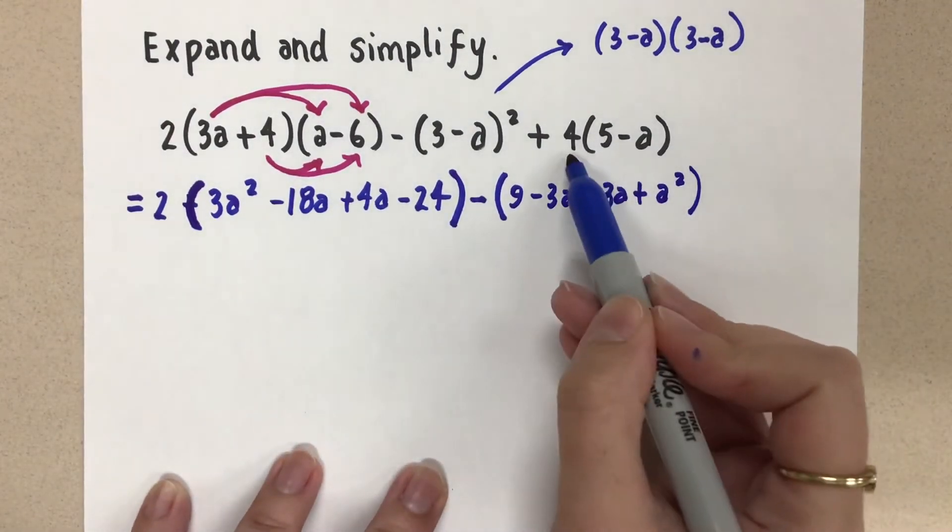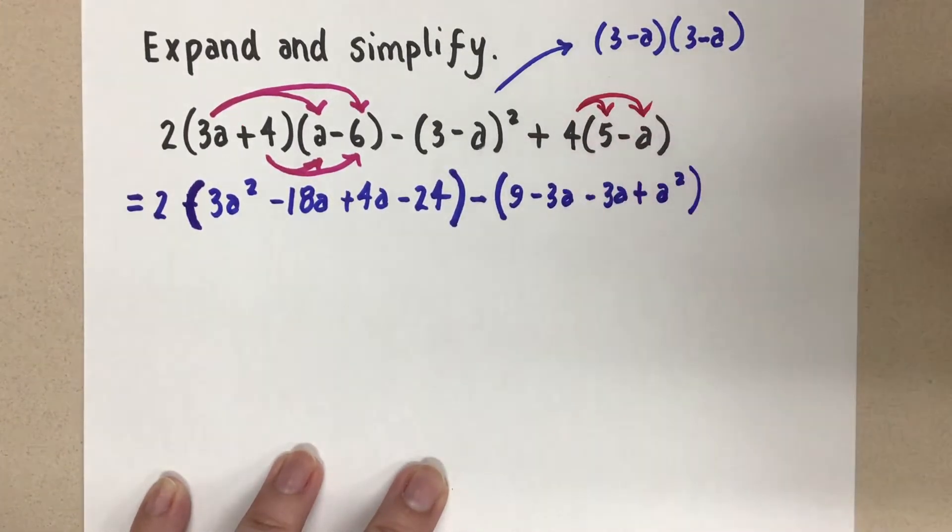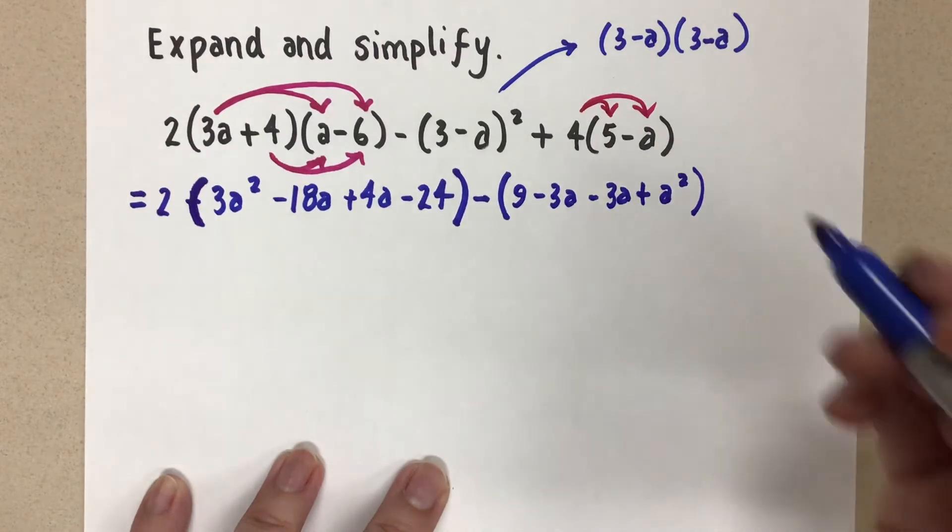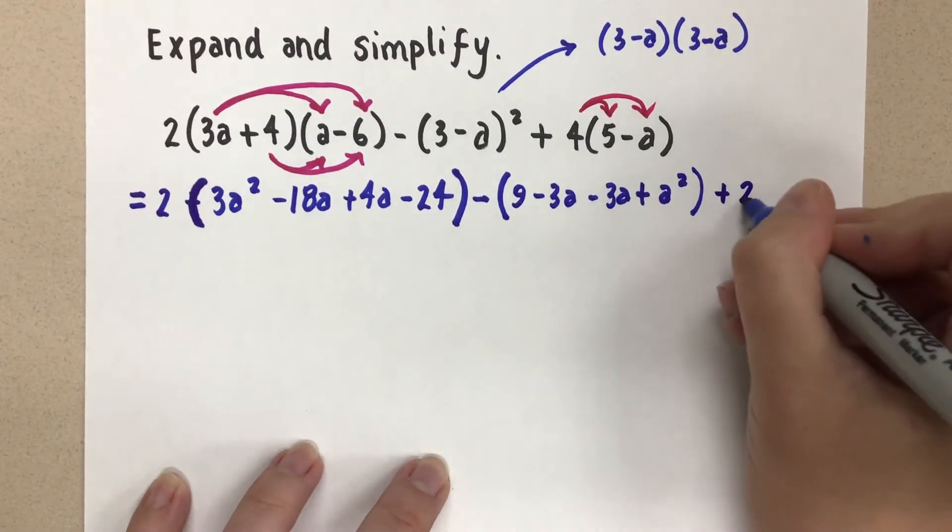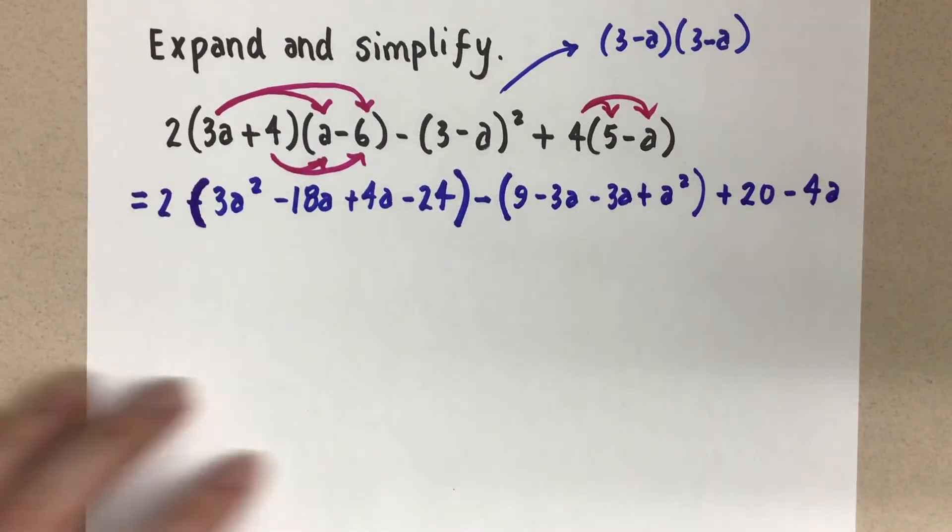And finally here, I'll go ahead and distribute this 4 in. Why not? I can do it now or I can do it in the next step. It doesn't matter. And that's going to leave me with plus 20 and then minus 4a.